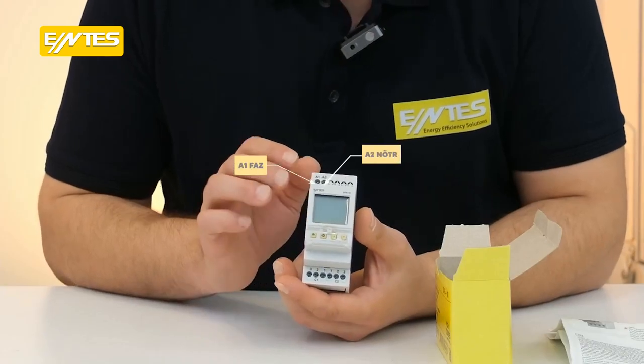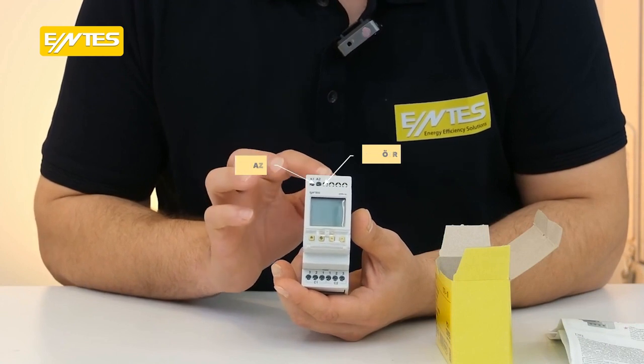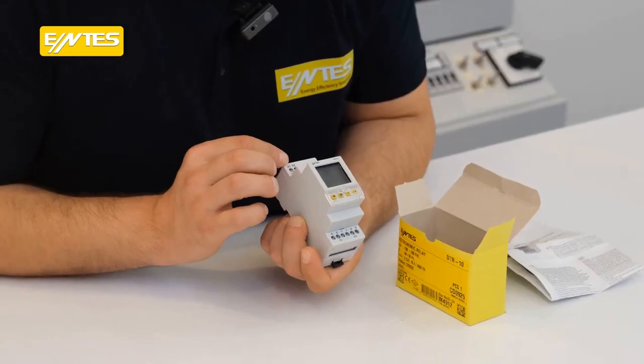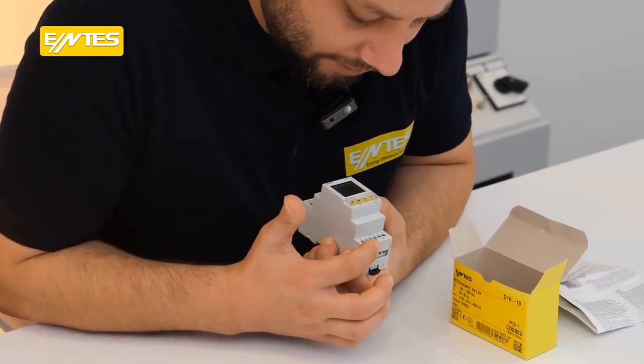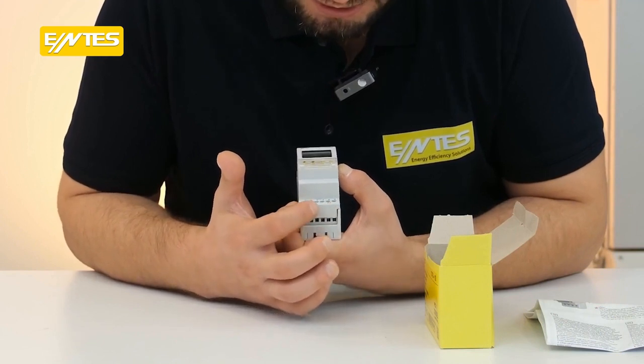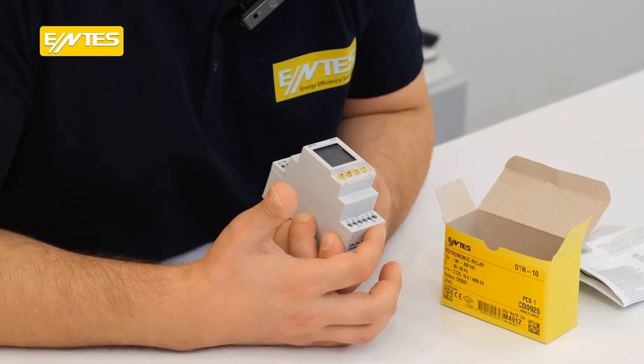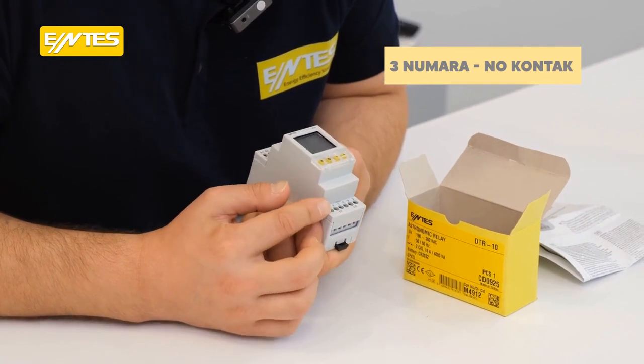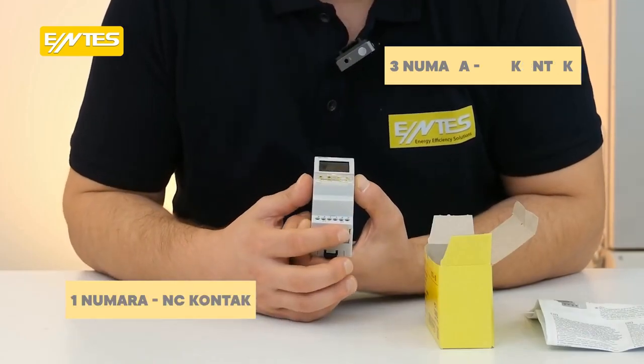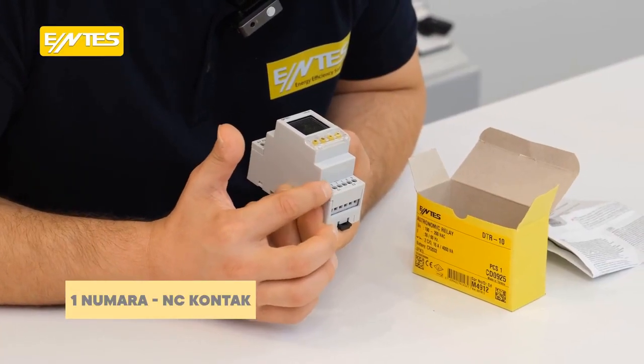The device is powered by A1 phase and A2 neutral. Since there are two relay outputs on the bottom side of A1, energy is supplied to the number 2 of C1 by jumping from A1. And if we are going to use the second relay, energy is supplied to the number 2 of C2. Number 3 is a NO contact in both relays. One of the numbers is NC contact. We'll exit at number 3, we'll exit at NO.